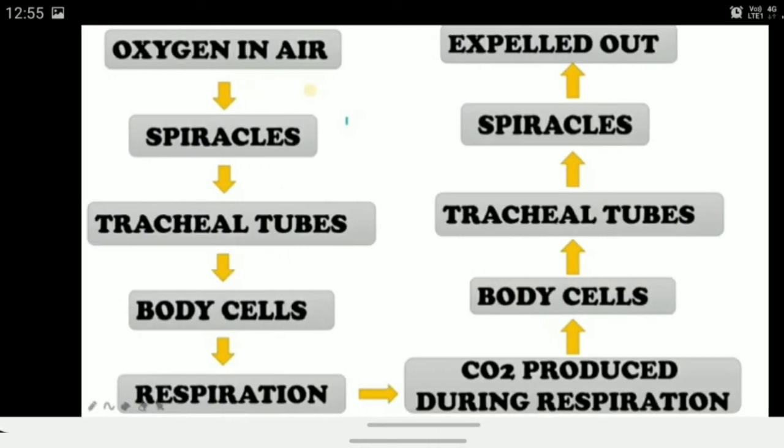The same process: oxygen-rich air passes through the spiracles into the tracheal tubes, reaches the body cells, which then perform respiration using oxygen to produce energy. Carbon dioxide produced travels back through the tracheal tubes, exits through the spiracles, and is expelled out of the body.